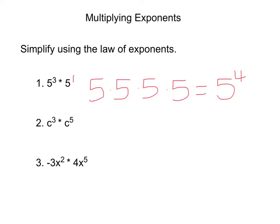It works the same for variables. If you have a variable instead of a number like c, it works the same. c to the third power would be c times c times c, and then we're multiplying that by c to the fifth, so it would be c times c five times.